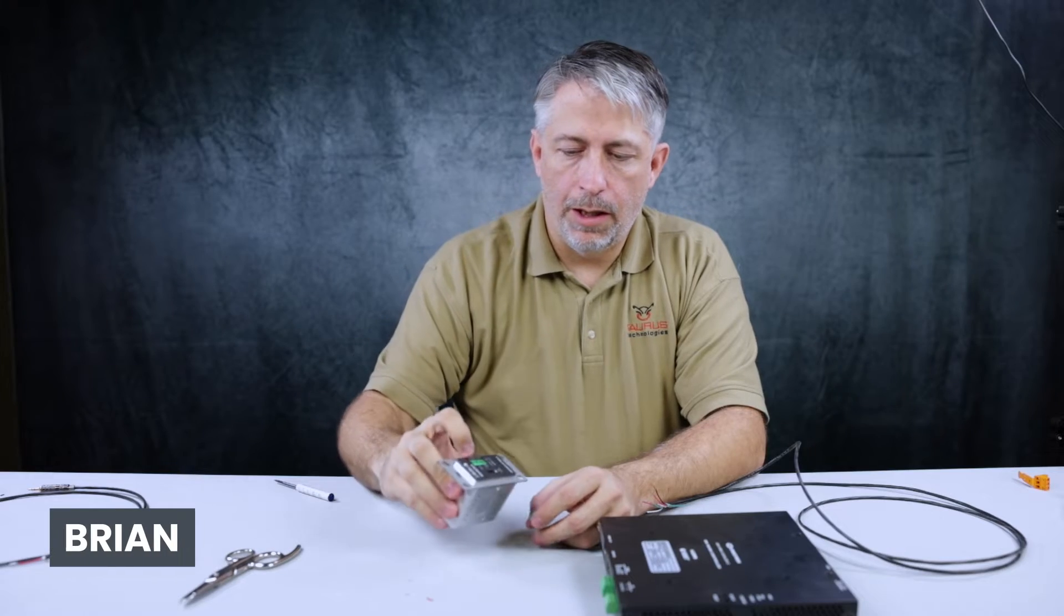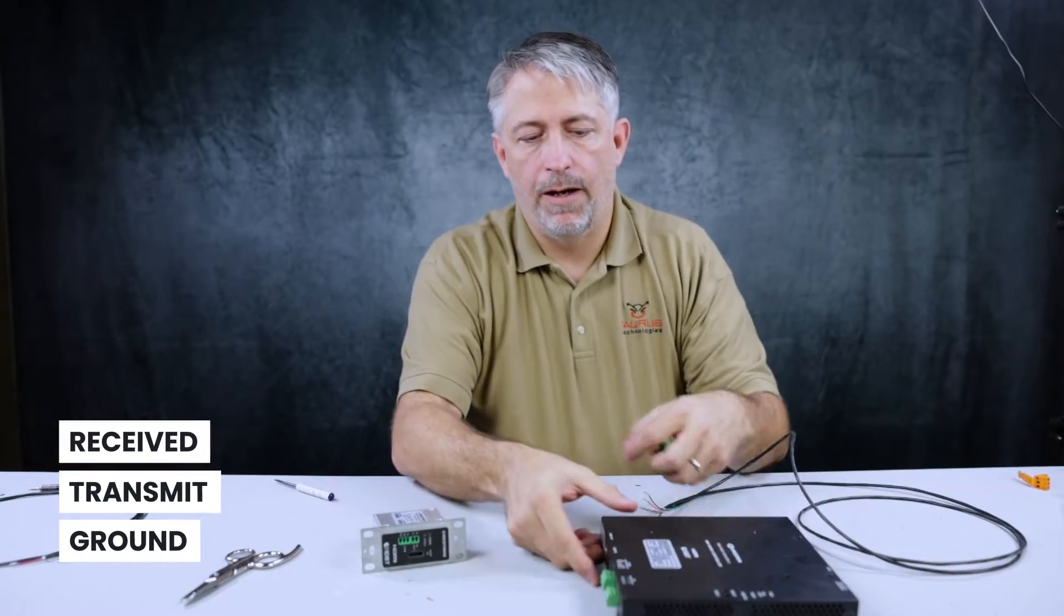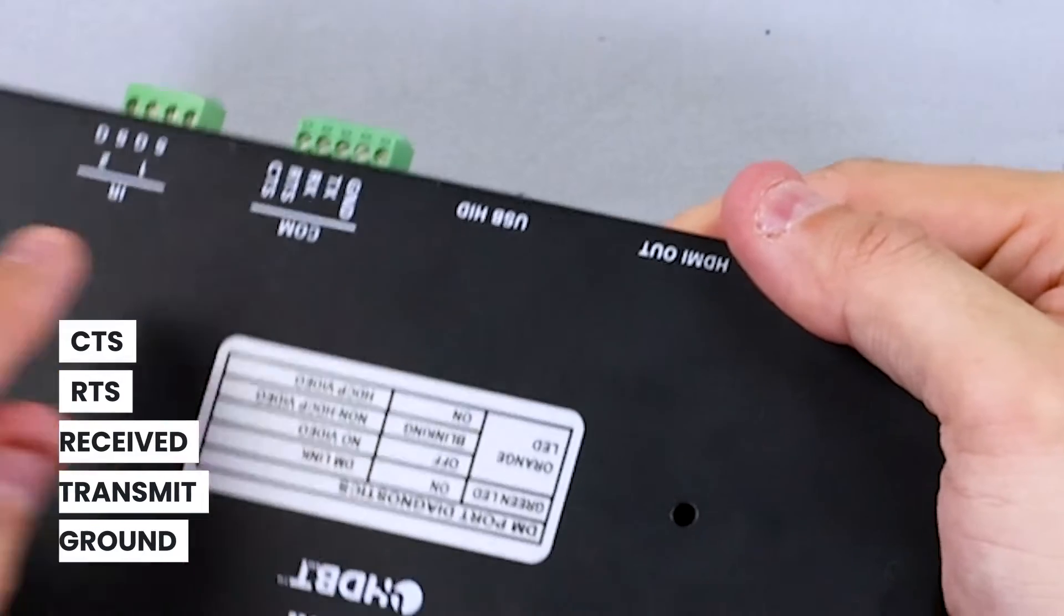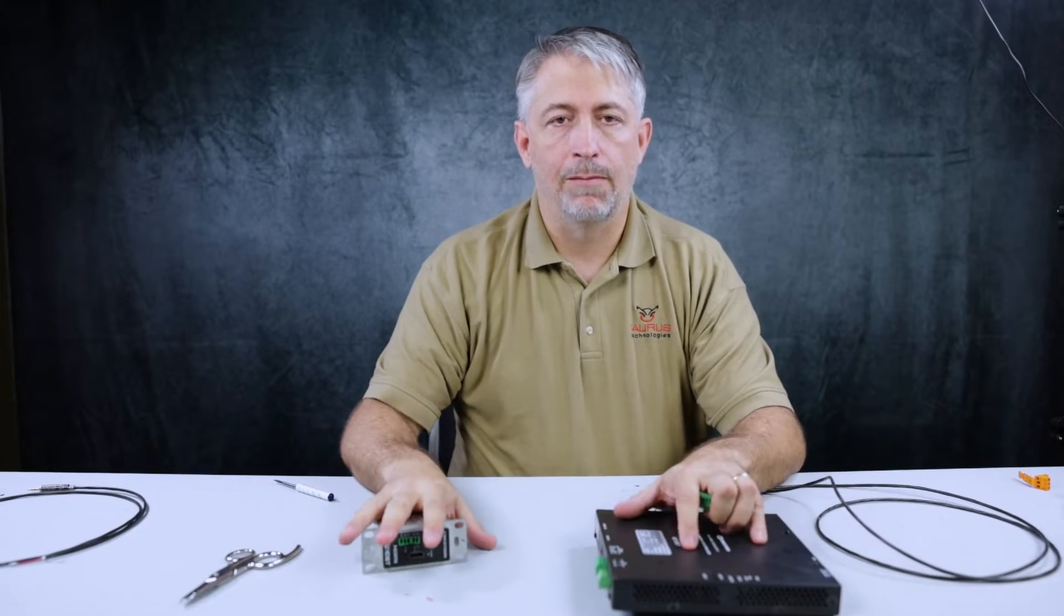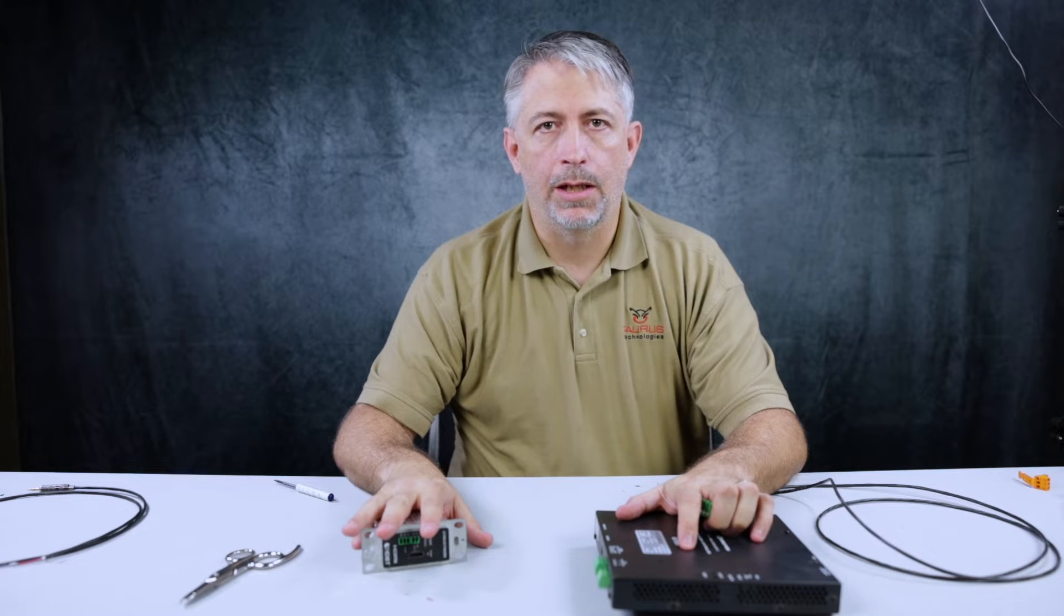There can be 3-pin, which would be ground, transmit, receive. There can be 5-pin, which can be ground, transmit, receive, RTS, CTS. You'll need to consult your device manual on which connections are important.